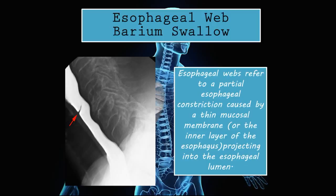Esophageal webs on barium swallow. Esophageal webs refer to a partial esophageal constriction caused by a thin mucosal membrane — the inner layer of the esophagus — projecting into the esophageal lumen. The esophagus is made up of four main layers: the mucosa, submucosa, muscular layer, and adventitia. When we have an esophageal web, there is a slight constriction because a piece of mucosa juts into the lumen, making it difficult for food to pass. The patient may present with dysphagia. This is what an esophageal web looks like on barium swallow.